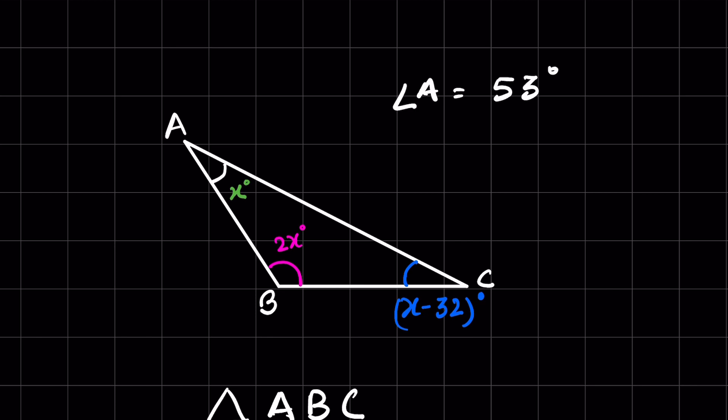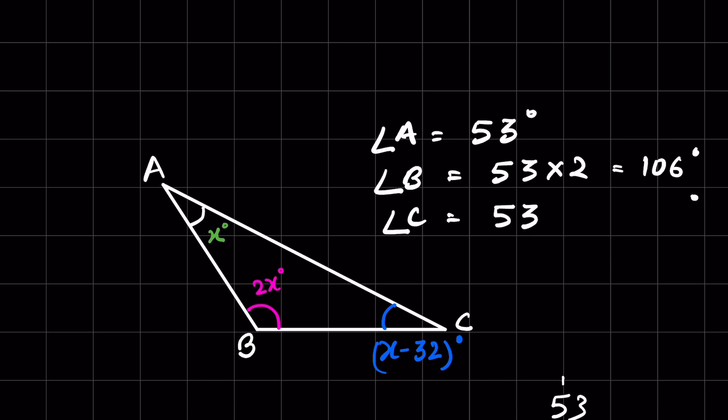So angle A is 53 degrees. Angle B will be 53 times 2, that is equal to 106 degrees. And angle C will be x minus 32, so angle C is equal to 53 minus 32, that is equal to 21 degrees.